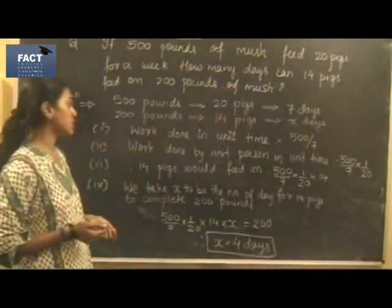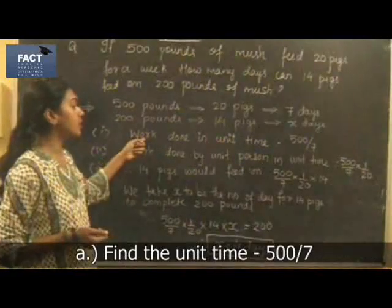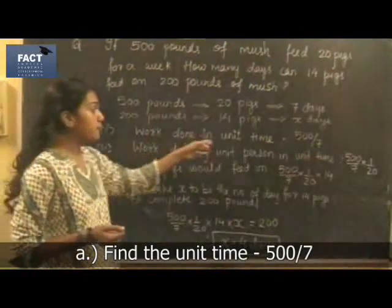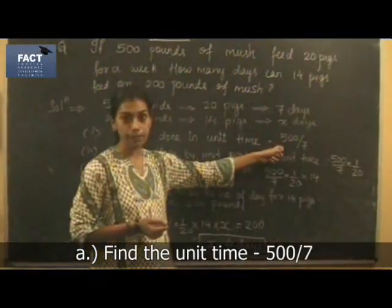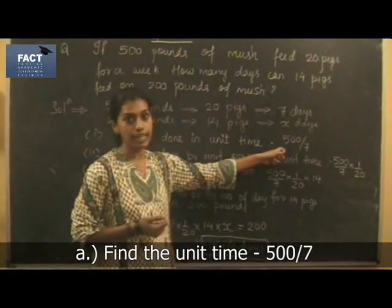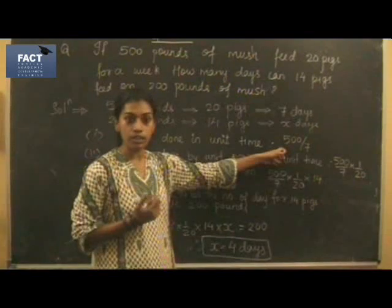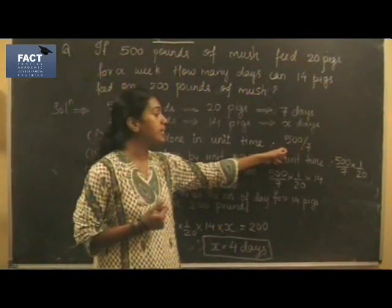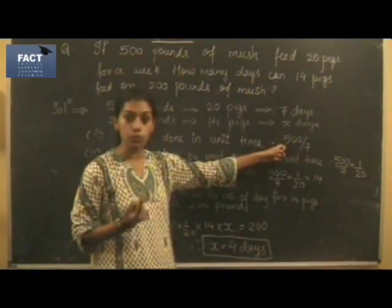The first step is finding out the work done in unit time. Since 500 pounds of mush is for 7 days, 500 divided by 7 gives you the unit work, that is the pounds of mush that 20 pigs would have in one day.